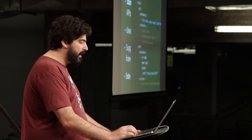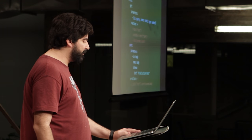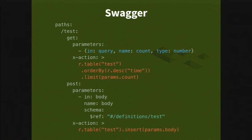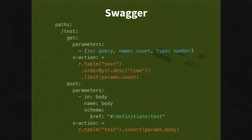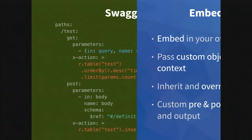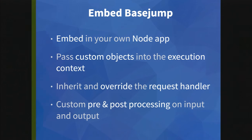Here's what a Swagger file looks like. What you're seeing is a few simple routes — a slash test route with GET and POST operations. You can see the X-action vendor property where I've put the query. You can actually write this by hand; it's fairly painless even if you didn't want to use the UI.